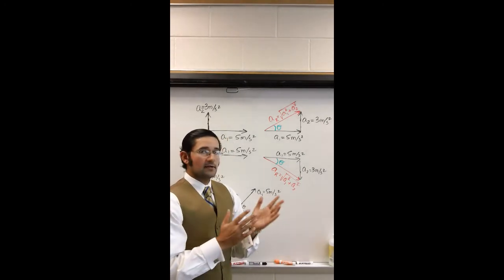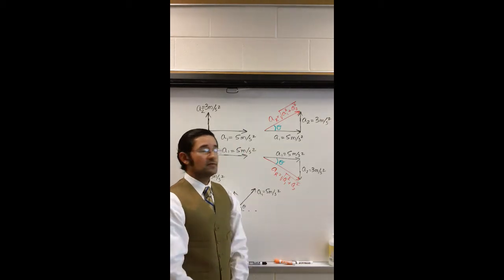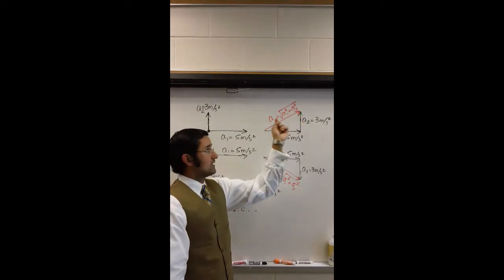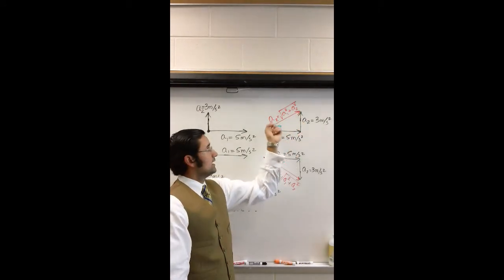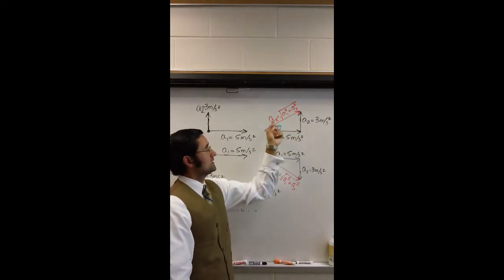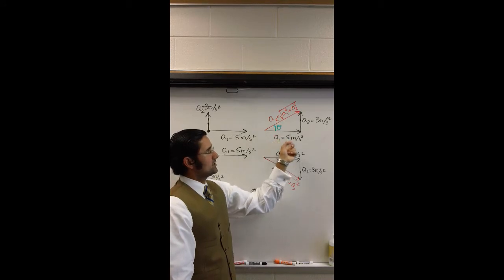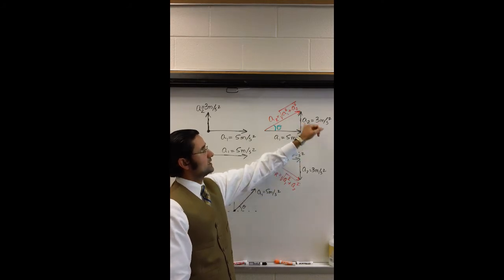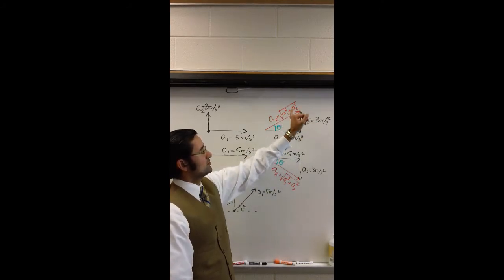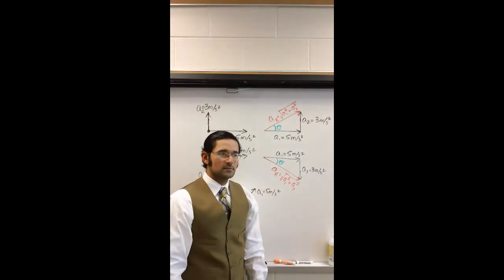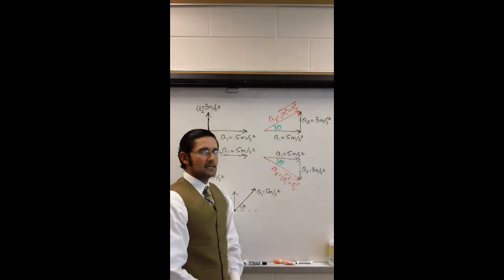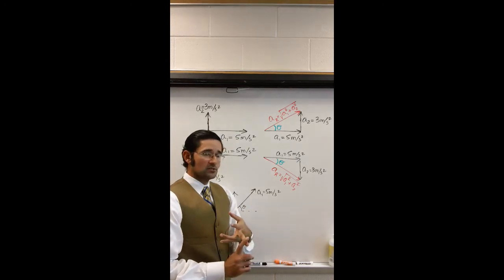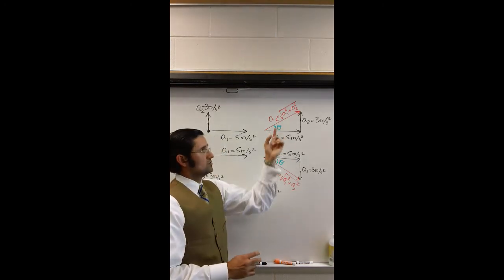The next simple case is when they're perpendicular to each other. I've taken these two vectors and rearranged them so that they make a right triangle. To find the resultant, which is the red vector — that's the resultant acceleration — I just use the Pythagorean theorem: A squared plus B squared equals C squared. So I take the square root of A1 squared plus A2 squared, where A1 is 5 m/s² and A2 is 3 m/s². But remember, that's not the only thing we need — you also need the direction. So to find theta, use inverse sine, inverse cosine, or inverse tangent.